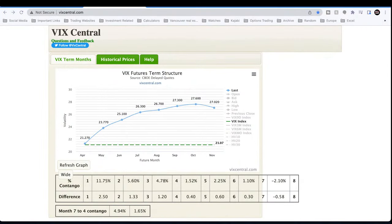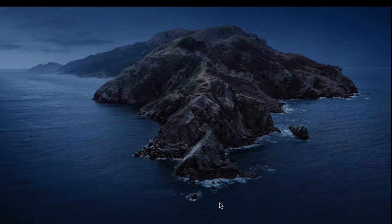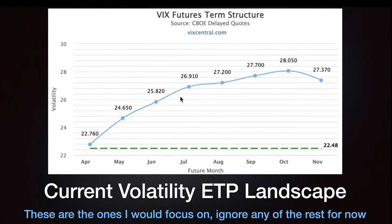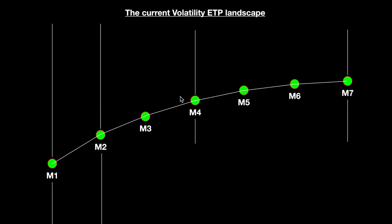Today we're going to unpack the intraday movements between all these volatility ETPs and answer the question: are the new ones — UVIX and SVIX — broken? There have been some days where it looks like there are discrepancies. The volatility ETP landscape is always based on the VIX futures term structure. The main products worth focusing on are the front-month M1 and M2 VIX futures products.